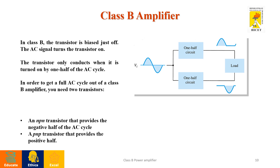Now we will discuss in detail about the Class B amplifier. Class B amplifier conducts for only one half cycle of the input signal, so if we want a proper full output signal, we have to use two transistors — one conducting in one half cycle and another in the other half cycle. We can use an NPN transistor for the negative half cycle and a PNP transistor for the positive half, so that at the load we get the complete input signal as the output.